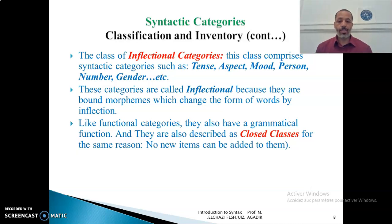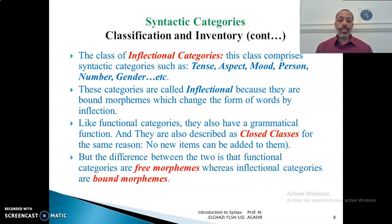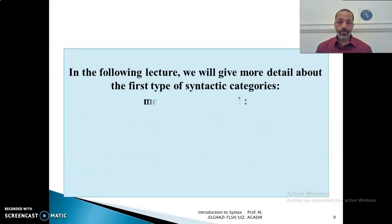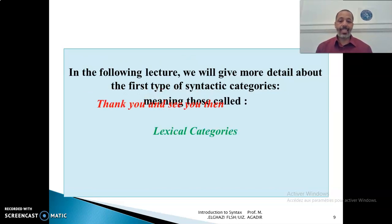The difference between the two is that functional categories are free morphemes, whereas inflectional categories are bound morphemes. Prepositions, conjunctions, and negative markers are free morphemes, whereas tense, aspect, mode, person, number, and gender are inflectional categories. In the following lecture, we will give more details about the first type of syntactic categories, which is called lexical category. Thank you very much and see you then.